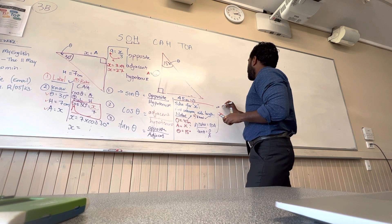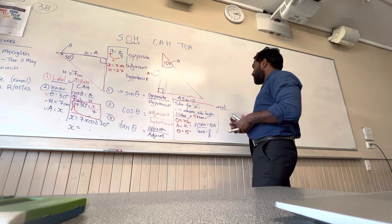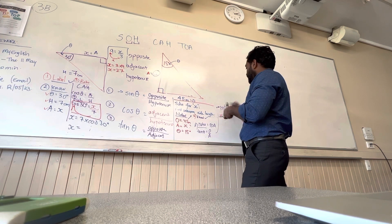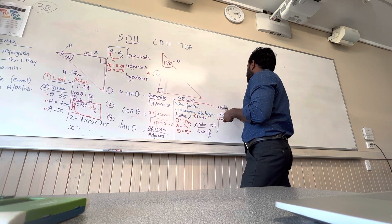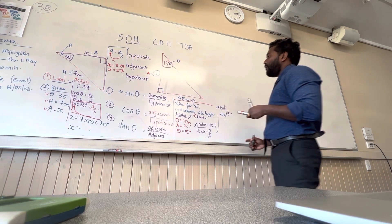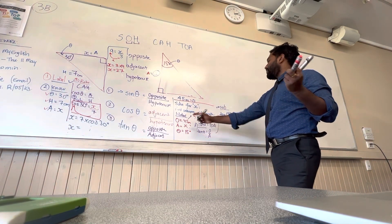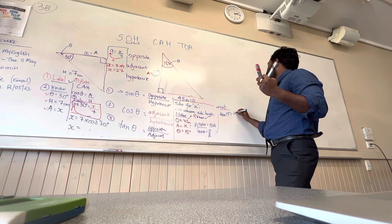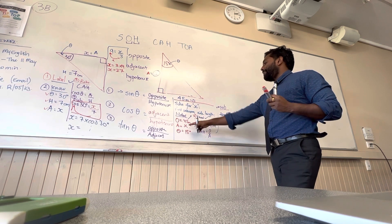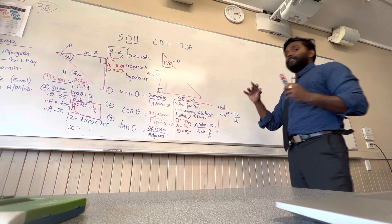What's your fourth step going to be? Substitute — game over. All right, so let's substitute. Tan 15 degrees is equal to O over A. What's my O? It's 45 over x.